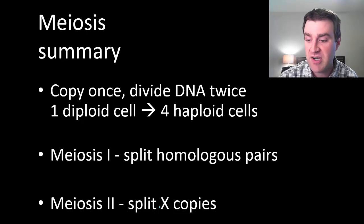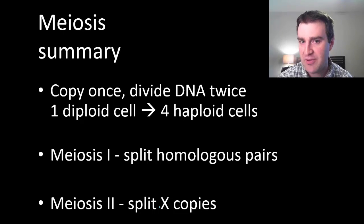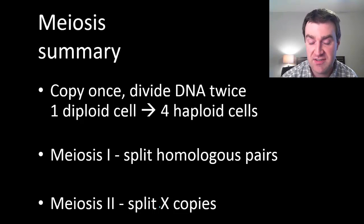So we just kind of talked a little bit about meiosis in this video. We talked about how we start with a diploid cell and how you ultimately get to a haploid cell by copying once but then splitting up the DNA and cells twice. In the first division we split the homologous pairs. In the second division we split the copies in half.